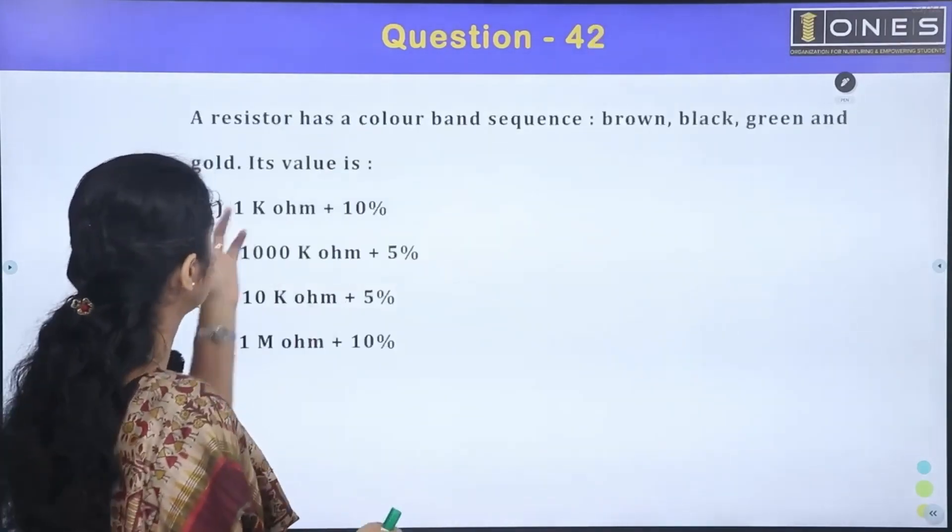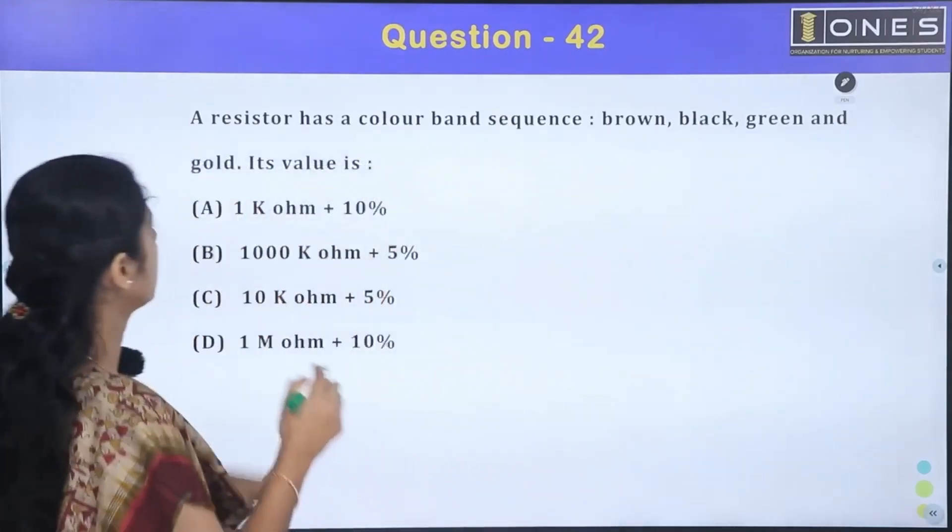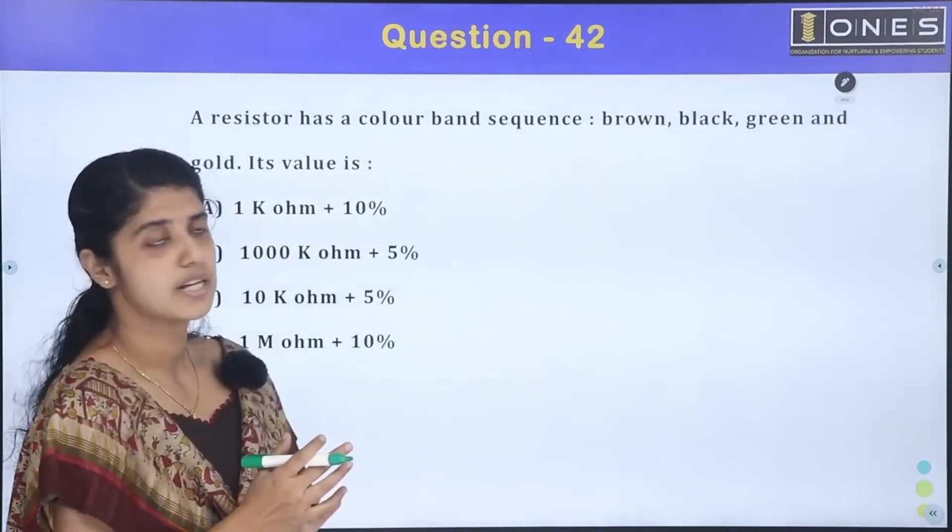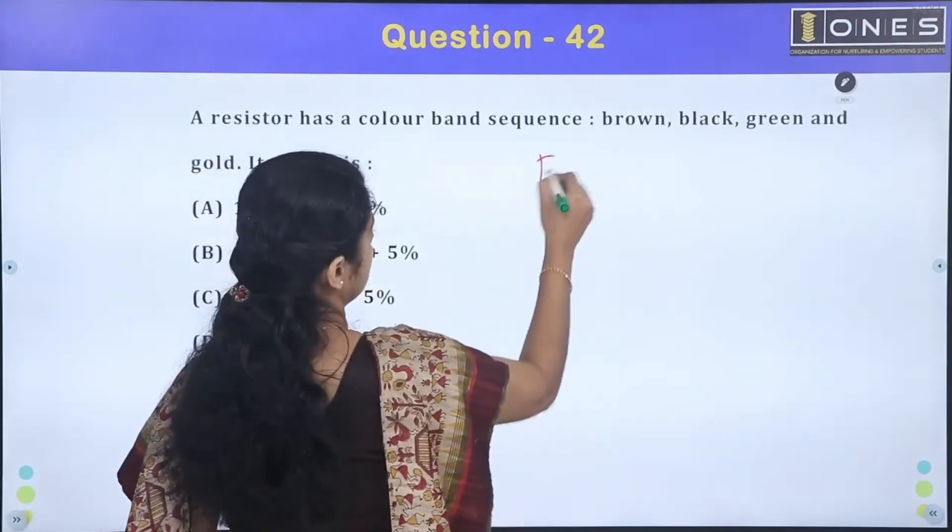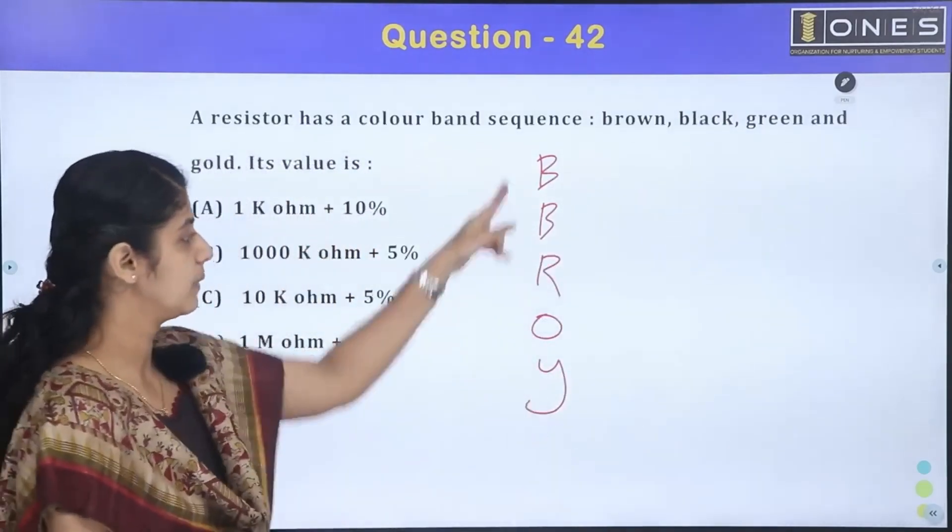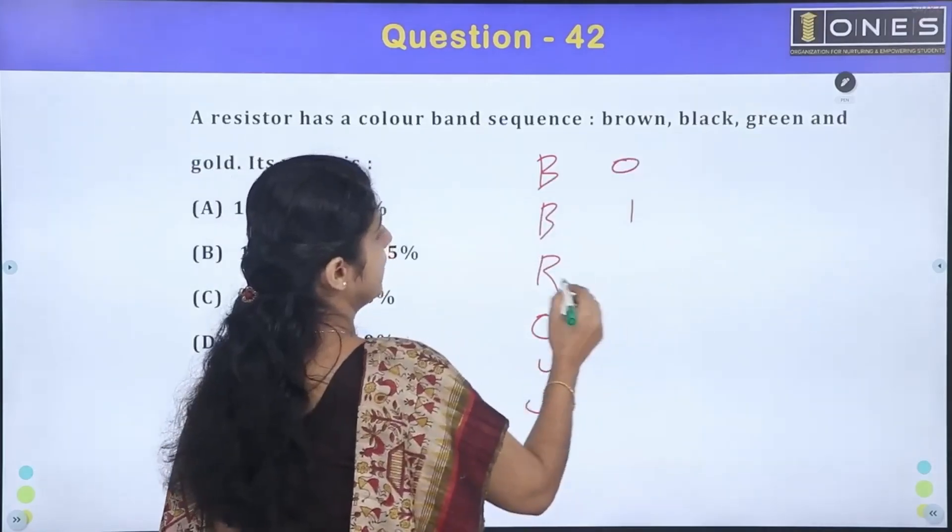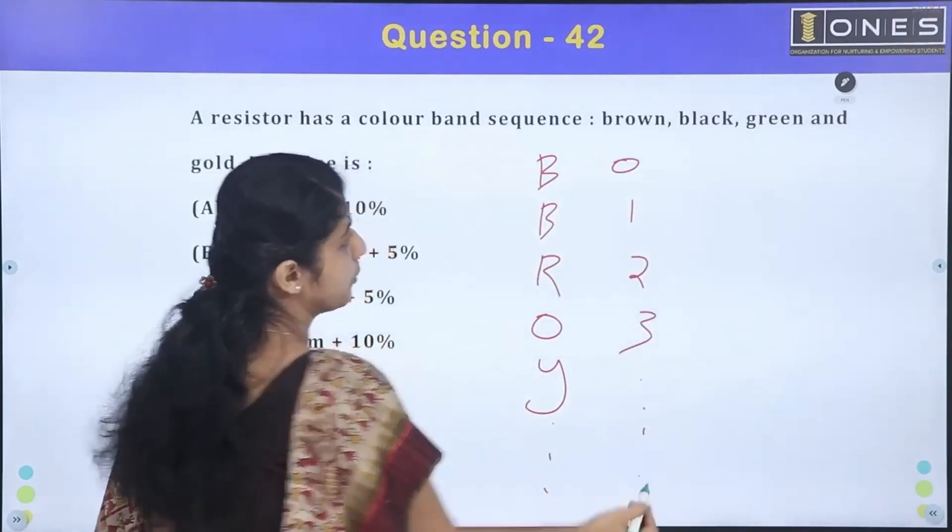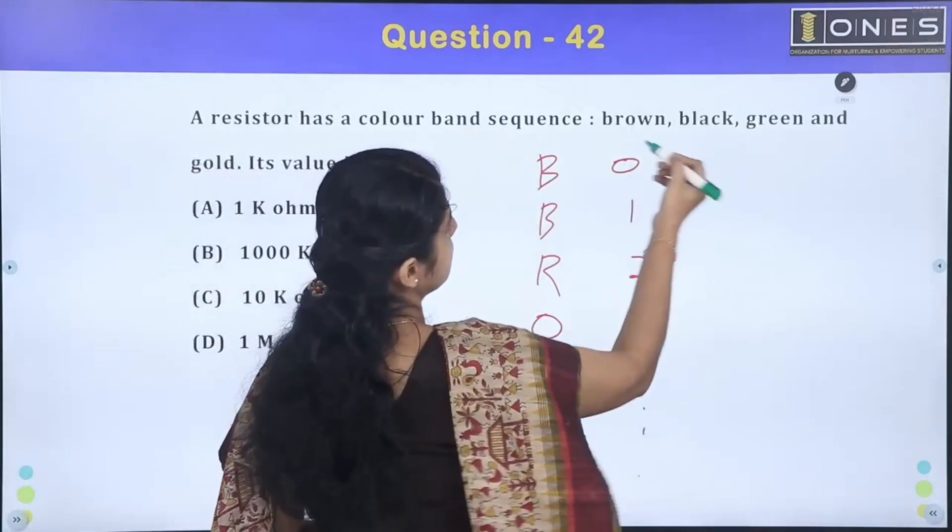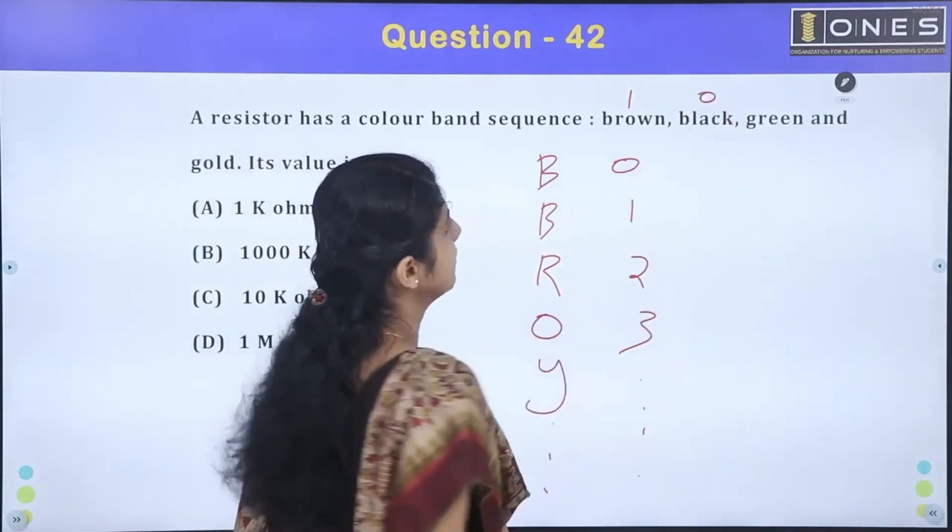Next question: A resistor has a color band sequence of brown, black, green and gold. Then the value of resistance. Color code, let's see. Black, brown, red, orange, yellow - what is the list? When we use this color code, we have a color and a number. Black is 0, brown is 1, red means 2, orange means 3. Brown is 1 first, let's write.